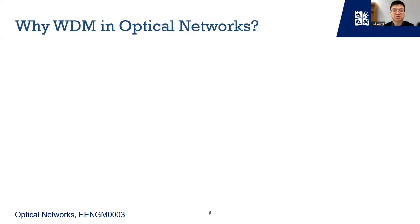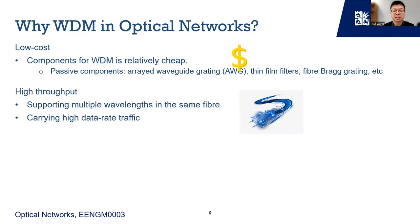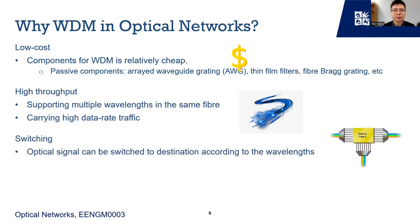Why is WDM so popular in optical networks? First of all, it is low cost. The WDM components and devices are relatively cheap compared to the bandwidth they can support. For example, passive components like AWG and thin film filters can all play important roles in the WDM system. Second, it can support high bandwidth communication by combining multiple high data rate traffic in the same fiber, so there will be multiple channels with different wavelengths. Third, with proper design, it can support switching functionality, either in a passive or active way, so the optical signal can be switched to the destination with assigned wavelengths.